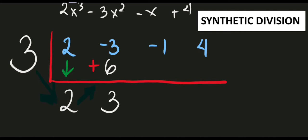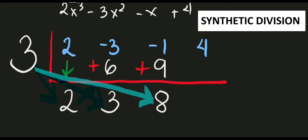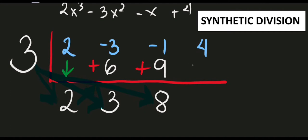Same procedure: multiply positive 3 by our divisor — 3 times 3 equals 9. Write 9 after the third coefficient and add: negative 1 plus 9 equals positive 8. Then multiply 8 by our divisor: 3 times 8 equals 24. Add to our last coefficient: 4 plus 24 equals 28.